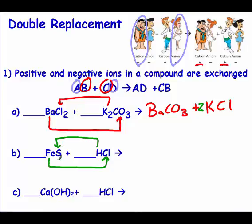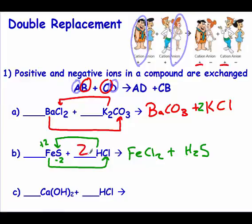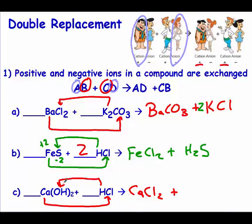Iron went with chlorine — sulfur is a negative two and iron is a plus two, so that's FeCl₂. Then hydrogen combined with sulfur to make H₂S. Balancing the equation, you need a two in front of HCl. For the bottom one, calcium should have gone with chloride — calcium is a plus two and chlorine is a minus one, giving CaCl₂. Hydrogen should have gone with hydroxide, forming H₂O. This is a base because it ends in hydroxide and it's a metal; the other is an acid. When you have an acid and a base, one product will always be water. Balancing: we need two chlorines and two waters.